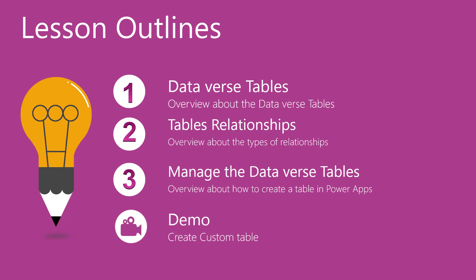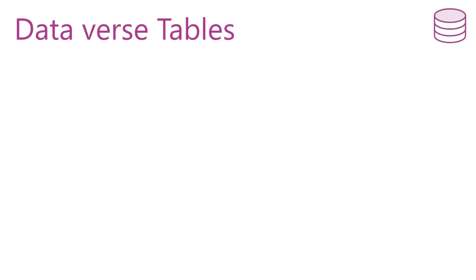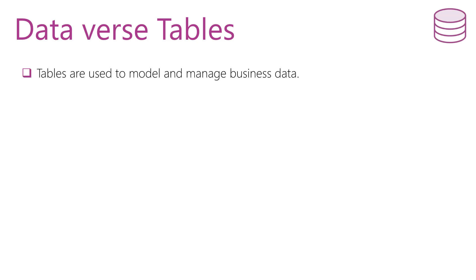We will begin with the dataverse tables. The dataverse consists of tables like the tables in a database, and each table consists of some columns. The tables in the dataverse are used to model and manage data. The tables describe the kind of data that is stored in the dataverse database. In PowerApps, a table defines information that you want to track in the form of records. Dataverse tables can have relationships that define the business connections between the data stored in the table.